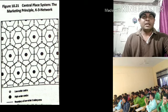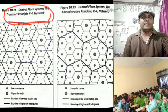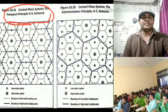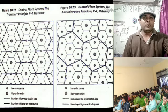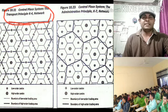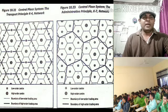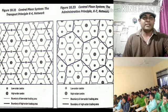The transportation principle allows as many large centers as possible to be located on the communication lines between centers. This results in K=4, meaning the center itself serves one-half of the six surrounding lower-order settlements plus the center itself. Under the K=4 network, the ratio of settlements is 1, 3, 8, 32, 128, 512, and 2048.